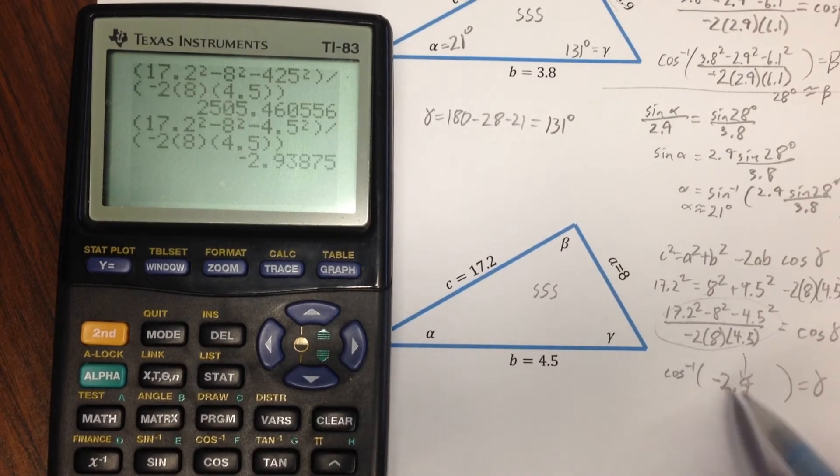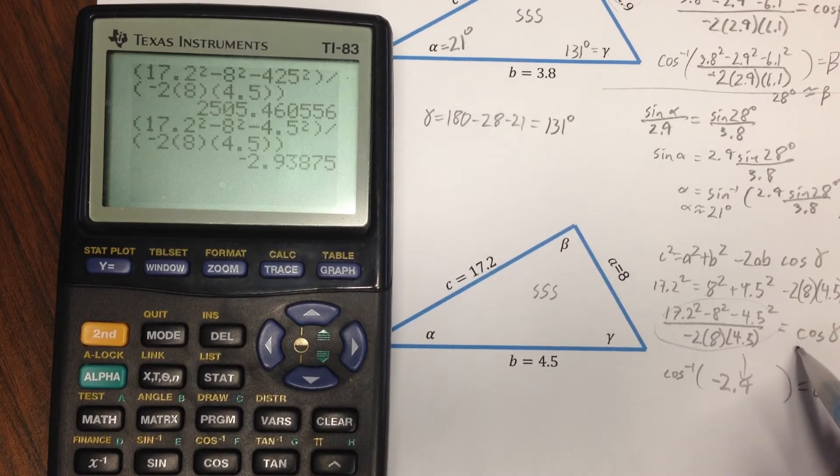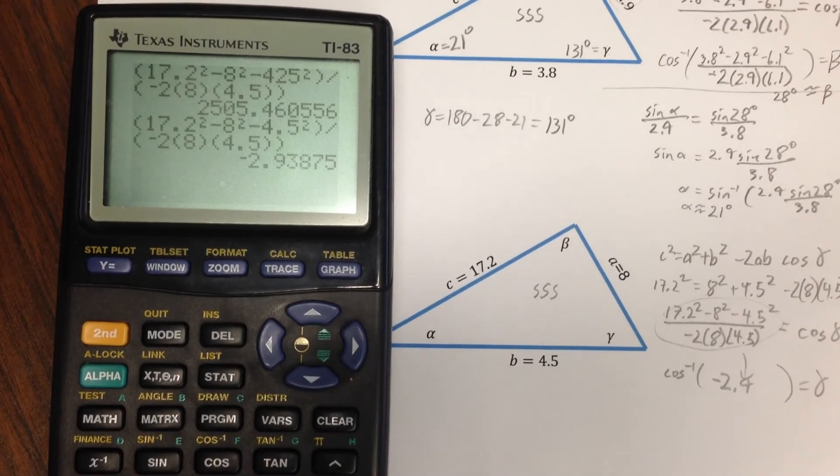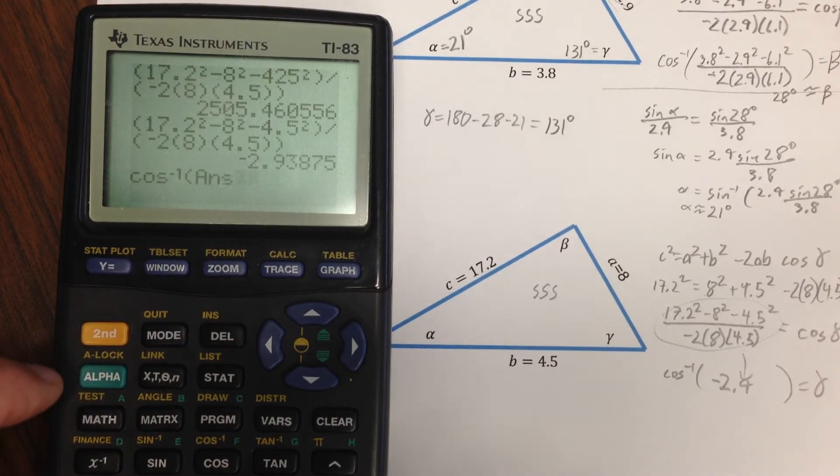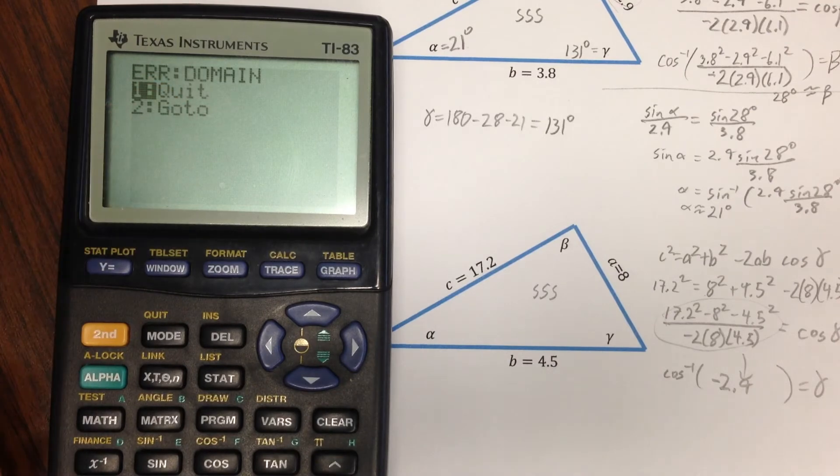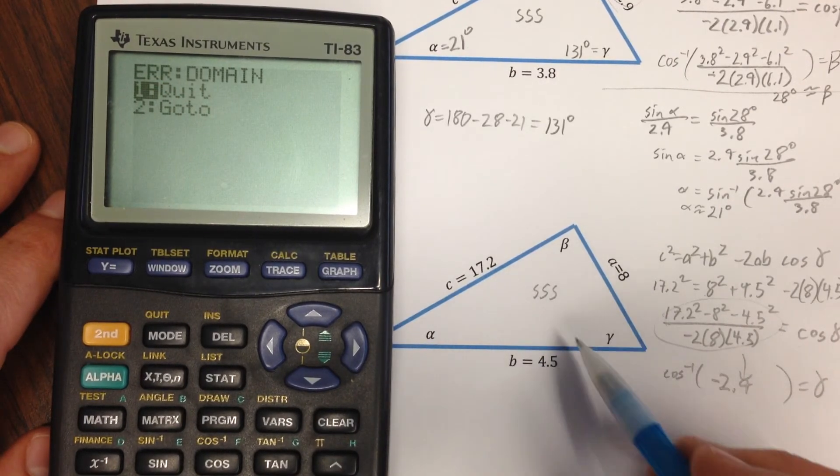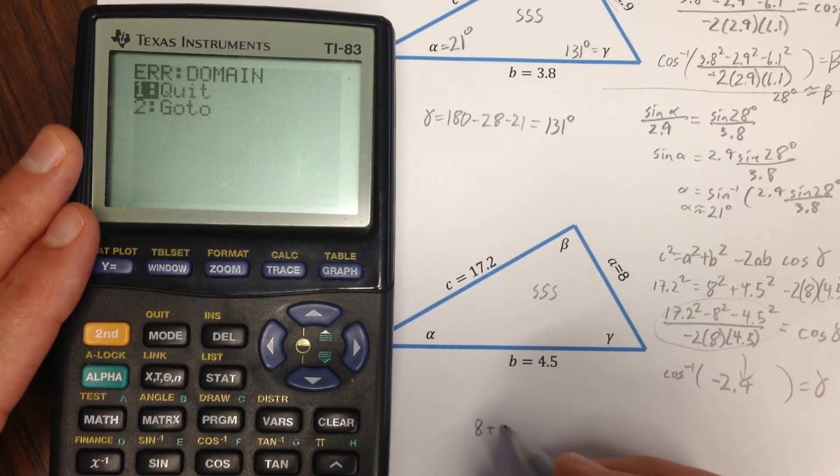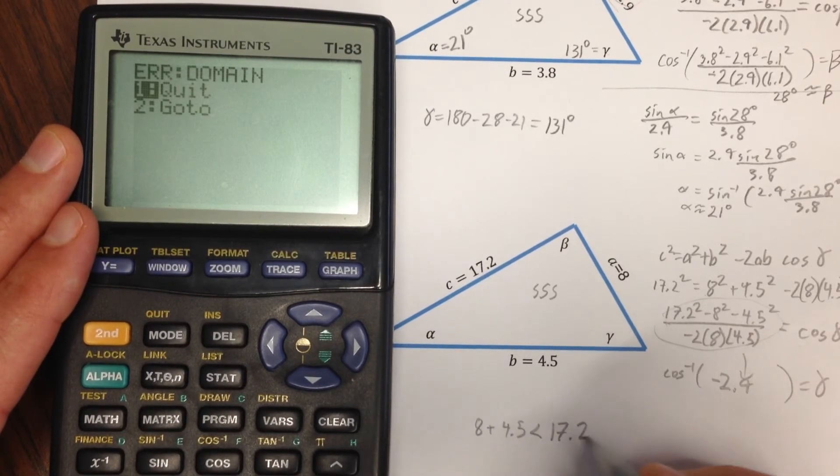Well, can cosine have an output of negative 2.9? Certainly not. Cosine's range is negative 1 to 1. And so, if you took cosine inverse of that number, you would get a domain error or some sort of error. Why? Well, because there just isn't a gamma that will make this work. Well, why is that? Well, notice that 8 plus 4.5 is distinctly less than 17.2.